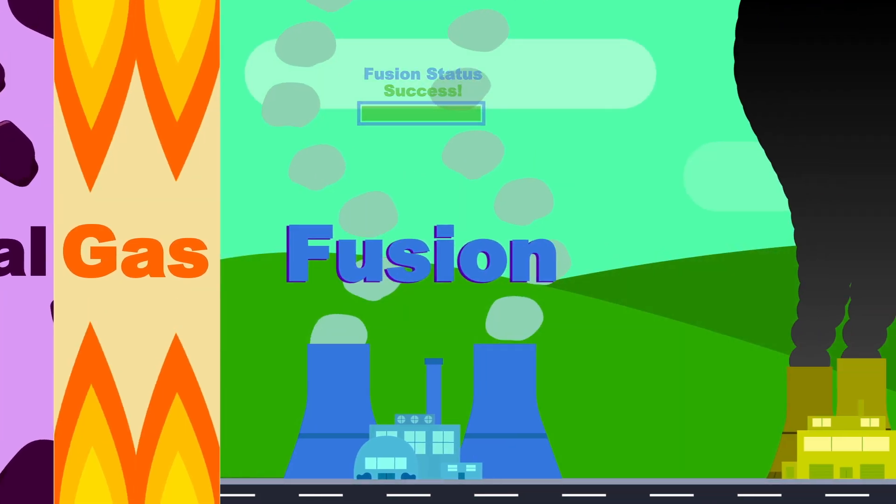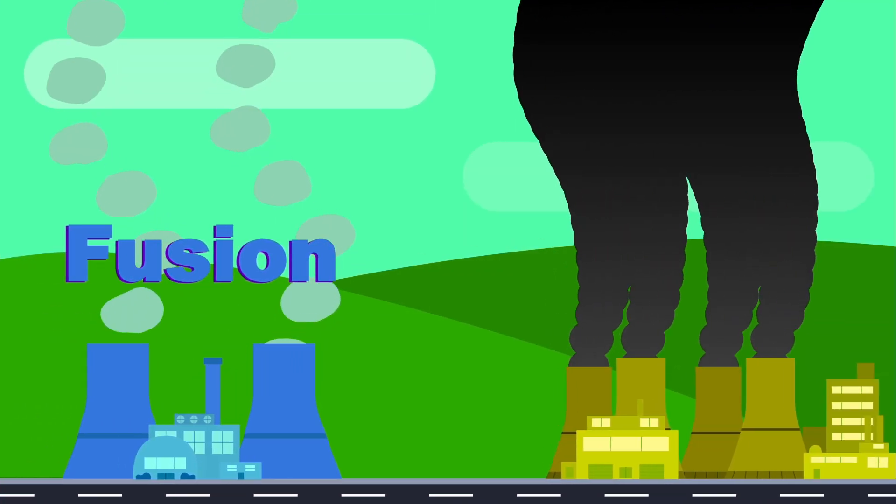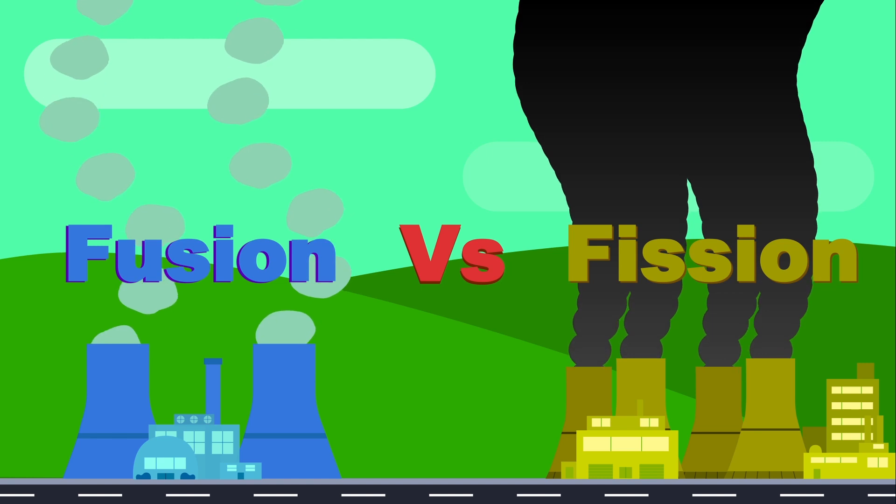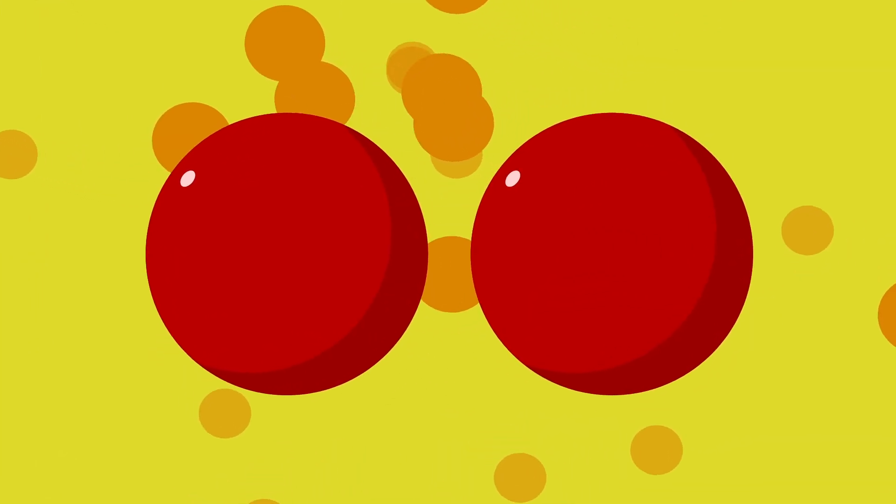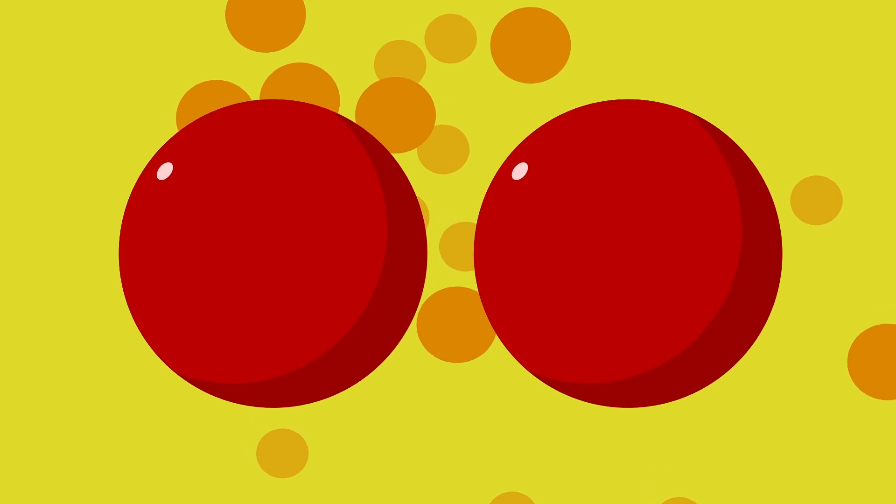But first, what makes nuclear fusion different from our current nuclear power? The process that takes place in power plants like this is nuclear fission. Here, atoms are split in order to create energy. The only problem is the fuel is radioactive, and when things go wrong, it can be deadly.